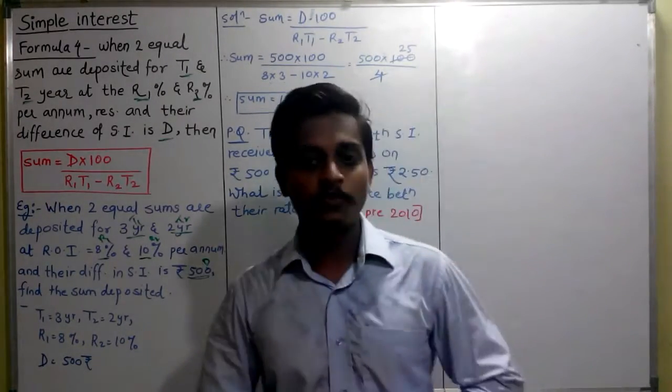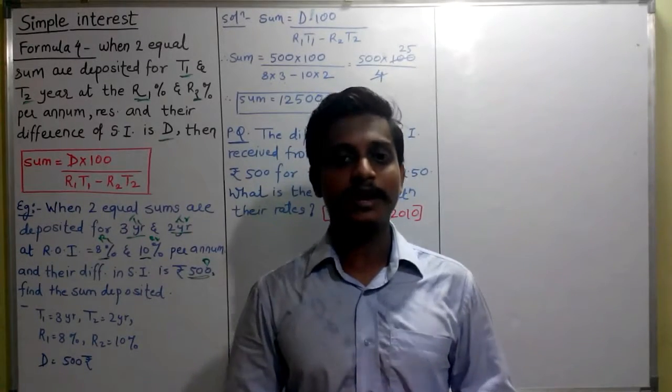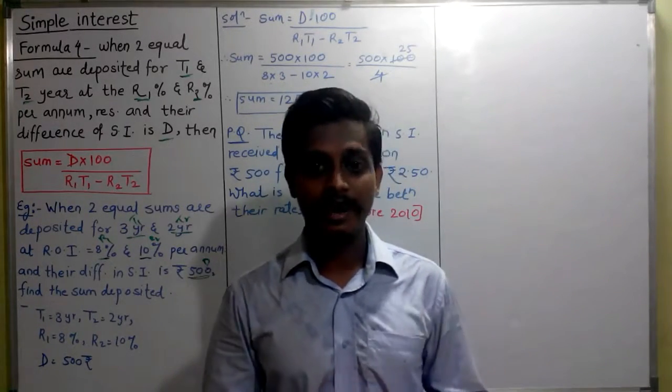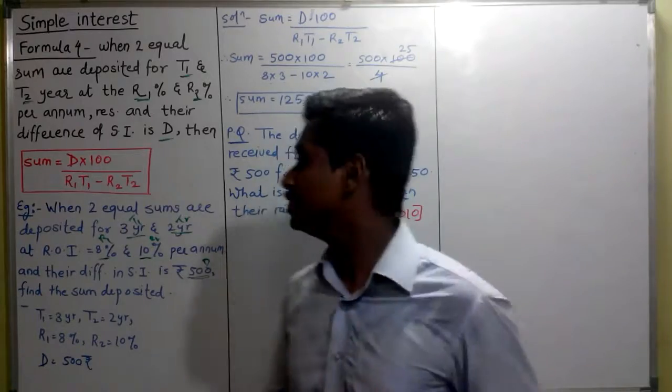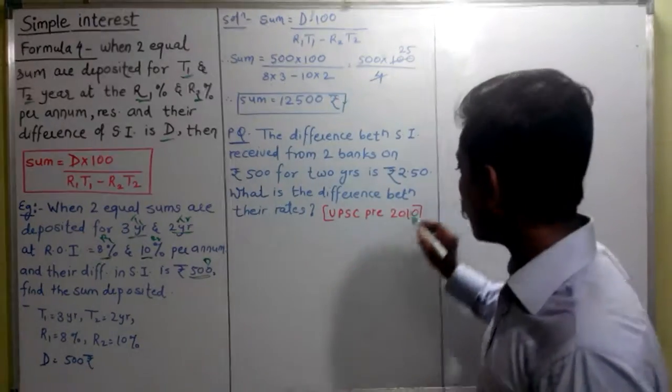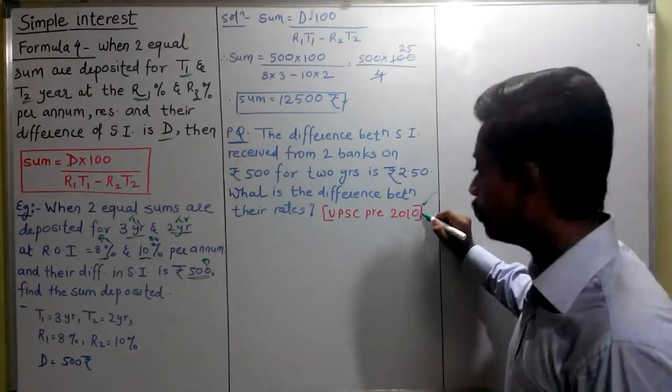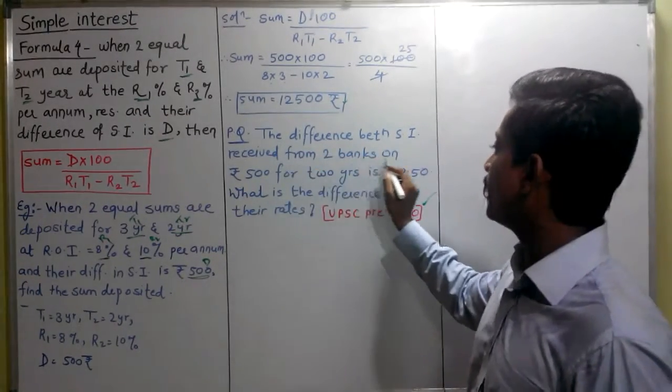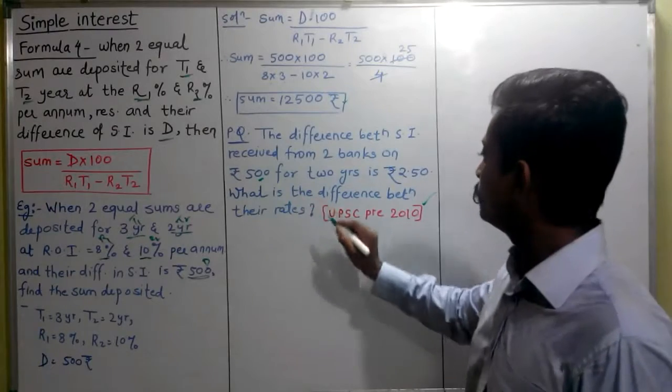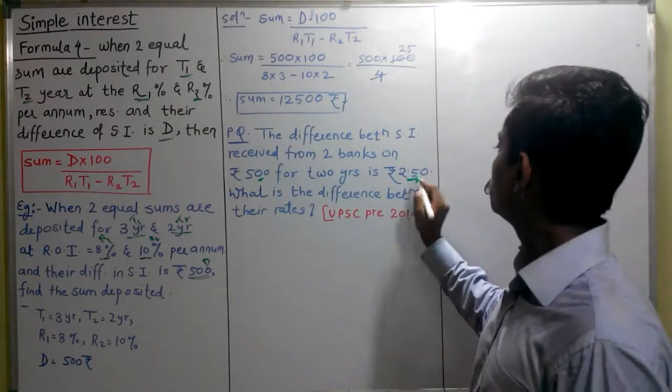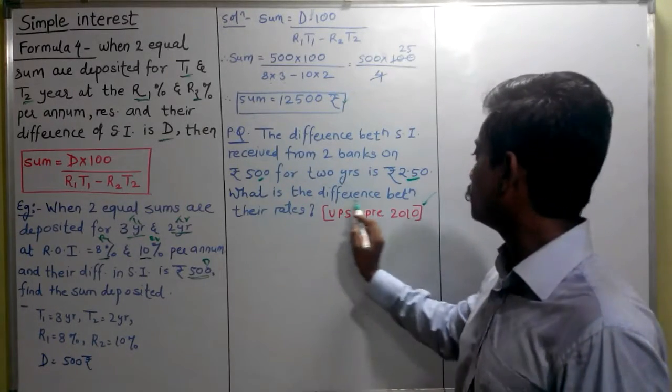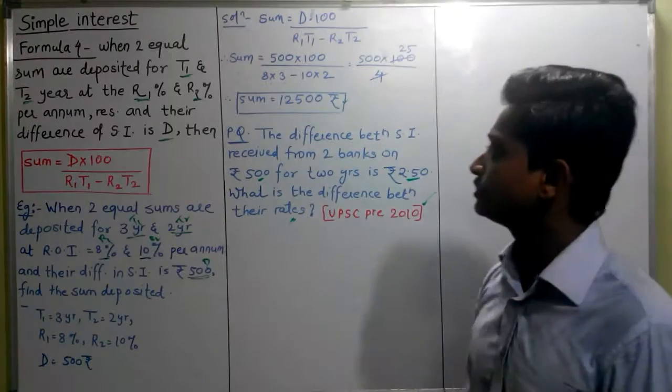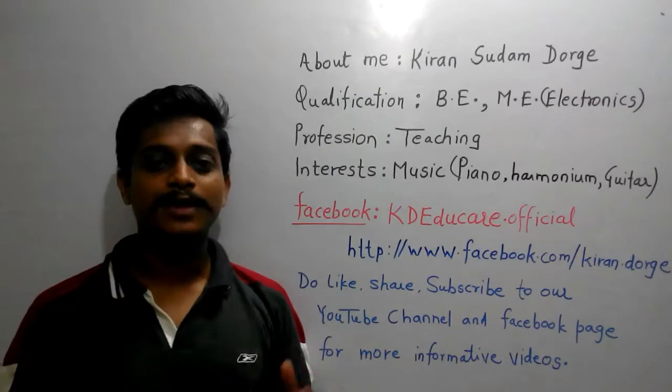Solve one practice question. I want you to solve this question and write its answer in the comment section. I will check it and tell you whether it is correct or not. This question was asked in Civil Services Prelims 2010. The difference between simple interest received from 2 banks on Rs. 500 for 2 years is 2.50. What is the difference between their rates? So solve this question.